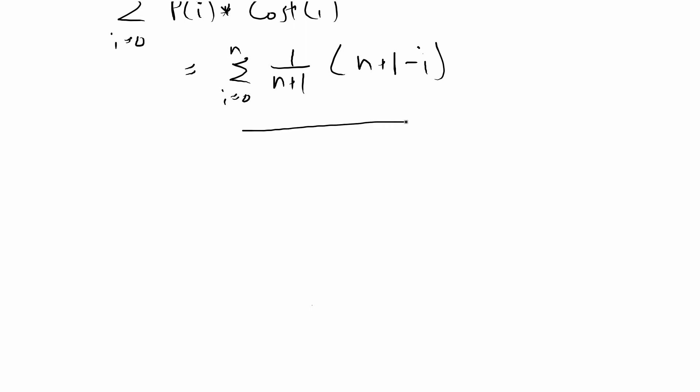With big sigma notation, anytime you have a constant you can pull it out of the formula. We can take out the 1 over n plus 1 because in this case what's changing and what's variable is the i, so we can pull that out as a constant.